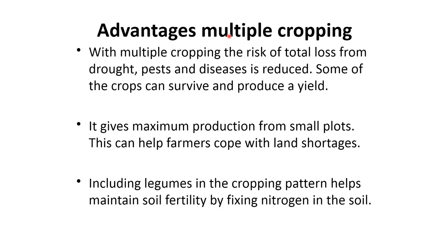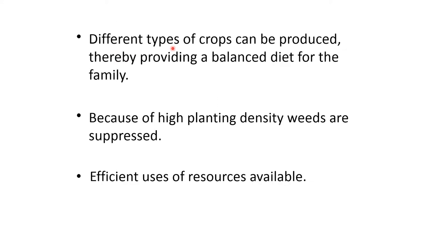Advantages of multiple cropping. With multiple cropping, the risk of total loss from drought, pest, and disease is reduced, as some crops can survive and produce a yield. It gives maximum production from a small plot, helping farmers cope with land shortage. Including legumes in the cropping pattern helps maintain soil fertility by fixing nitrogen in the soil. Different types of crops can be produced, providing a balanced diet for the family. Because of high planting density, weeds are suppressed, and resources are used efficiently.